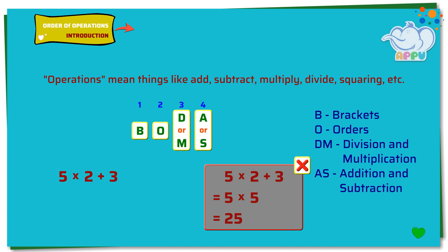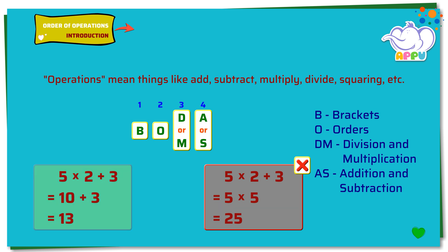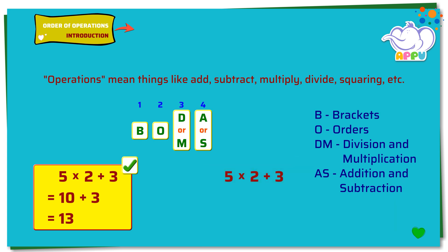So, the right answer for 5 times 2 plus 3, using BODMAS going from left to right: first multiply and then add. So the answer is 10 plus 3 equals 13. If we change it to 5 times (2 plus 3), using BODMAS we first add since it is in the brackets, then multiply. So the answer is 5 times 5 equals 25.